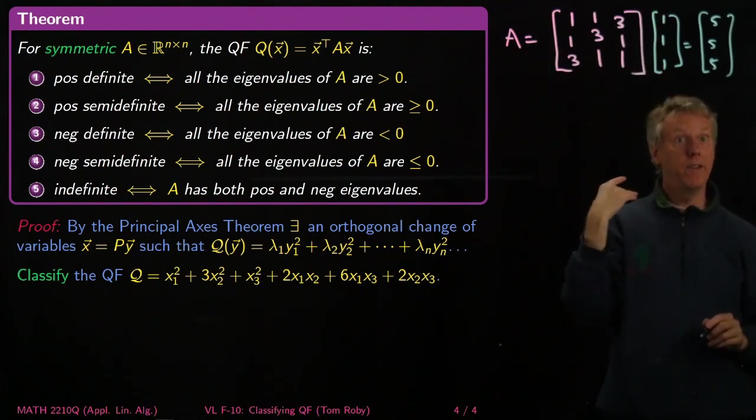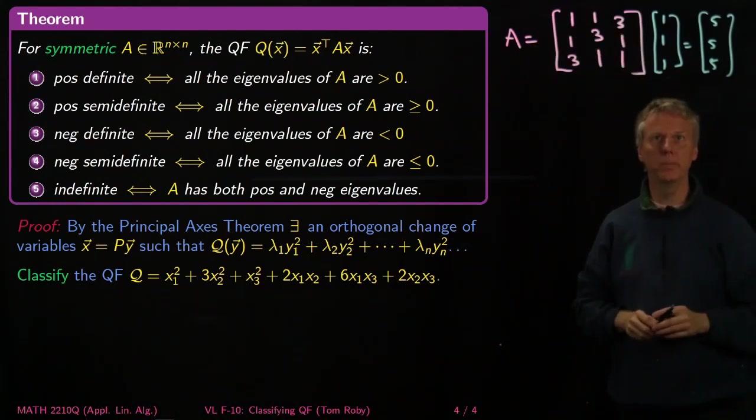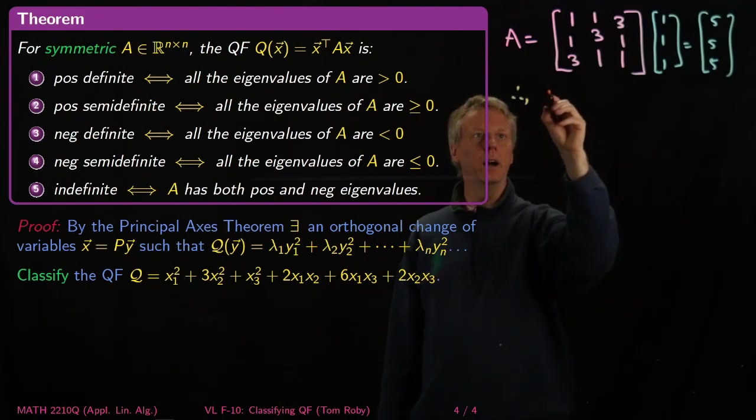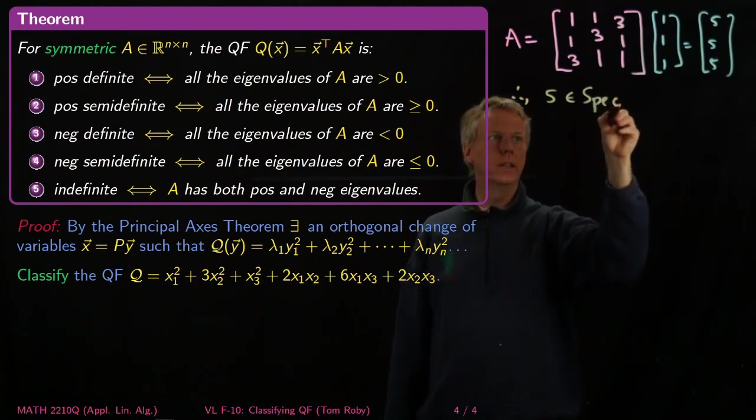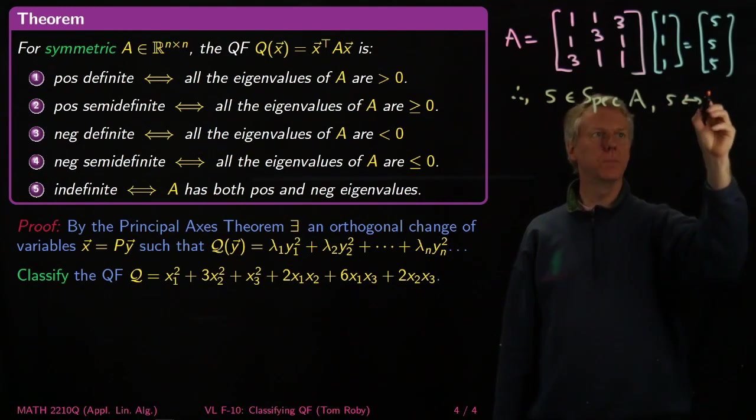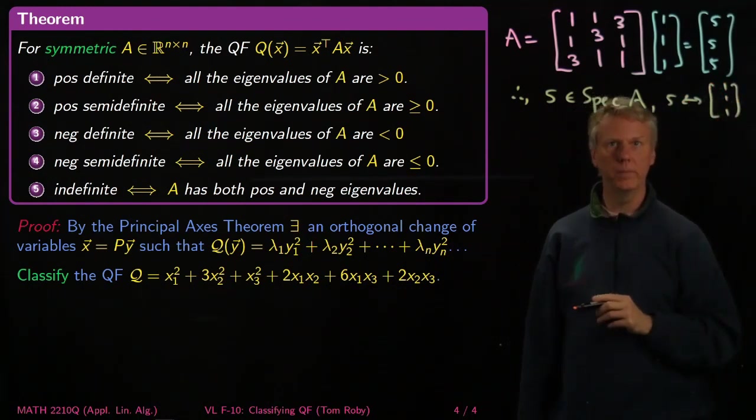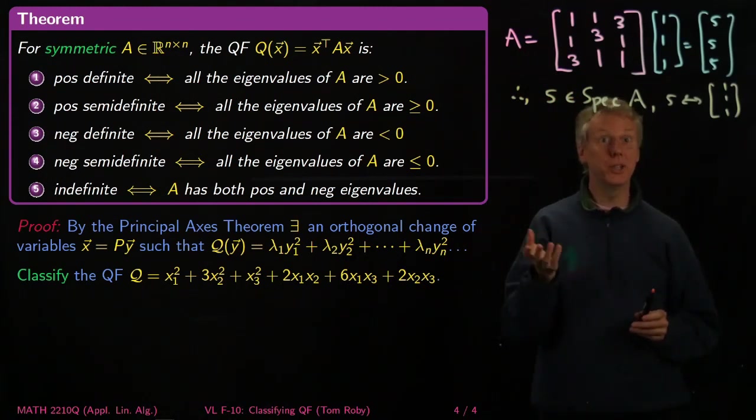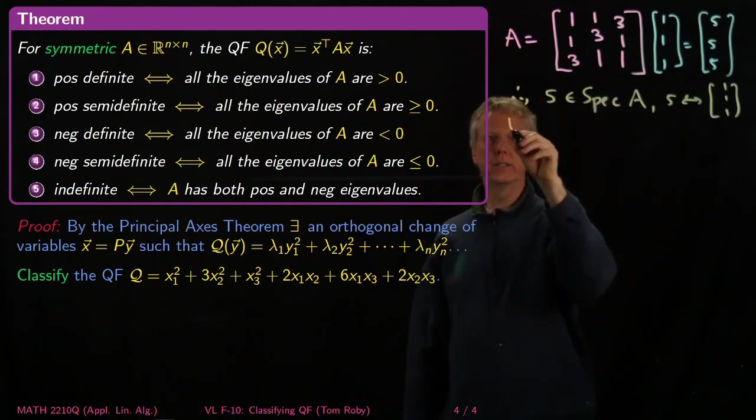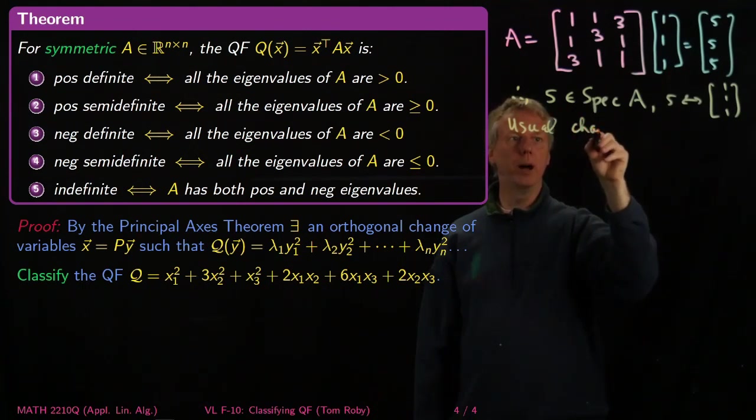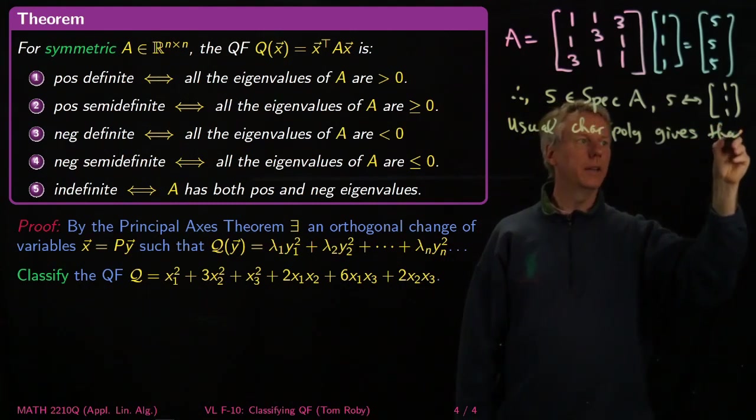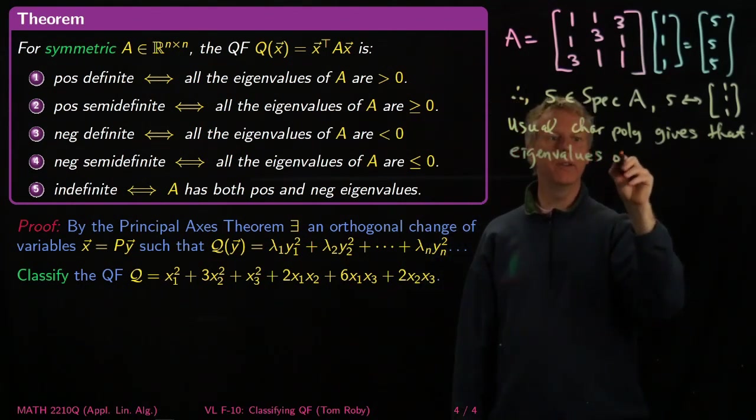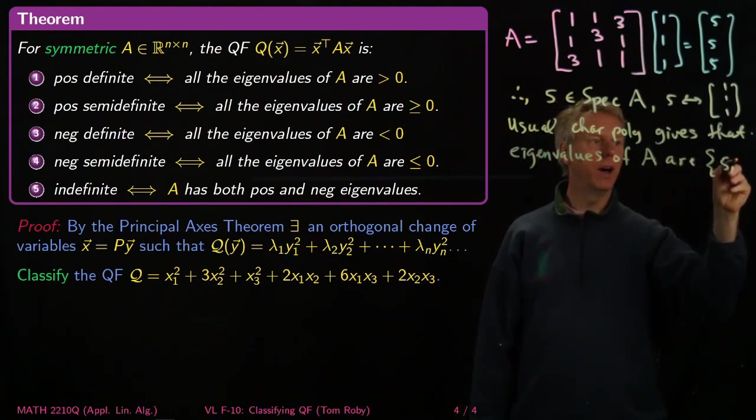So if my row sums are all constant, then that means that [1, 1, 1] is going to be an eigenvector corresponding to the eigenvalue of that constant row sum. We see from this analysis pretty easily that 5 is in the spectrum of A, and that 5 corresponds to the eigenvector [1, 1, 1].